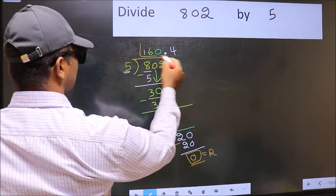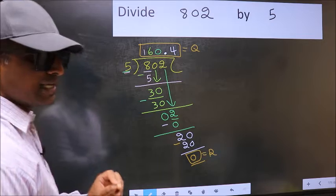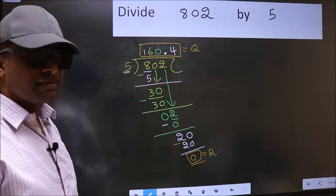And this is our quotient. Did you understand where the mistake happens? You should not do that mistake.